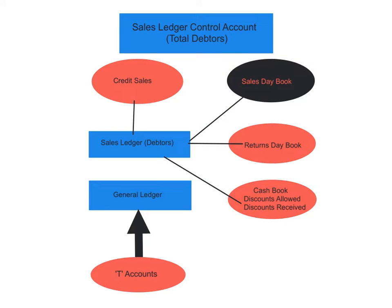The sales ledger control account is used by the chief accountant to check that all the T-accounts in the sales ledger — your debtor T-accounts — are correct and tally up with the books of original entry. You're checking for errors and potentially for theft or fraud. Any credit sale is recorded in the sales day book, any returns made by customers go into the returns inwards day book, and any payments by debtors go into the cash book. Discounts allowed are also recorded in the cash book.